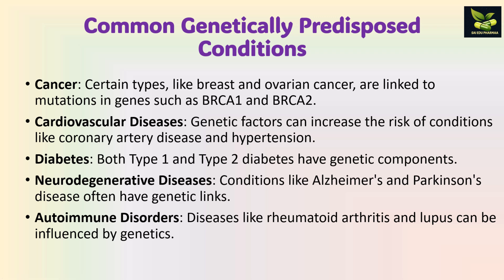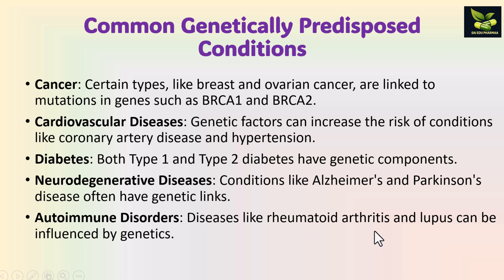Second, cardiovascular diseases — genetic factors can increase the risk of conditions like coronary artery disease and hypertension. Third, diabetes — both type 1 and type 2 diabetes have genetic components. Fourth, neurodegenerative diseases like Alzheimer's and Parkinson's disease also have genetic links. Fifth, autoimmune disorders like rheumatoid arthritis and lupus can be influenced by genetics.